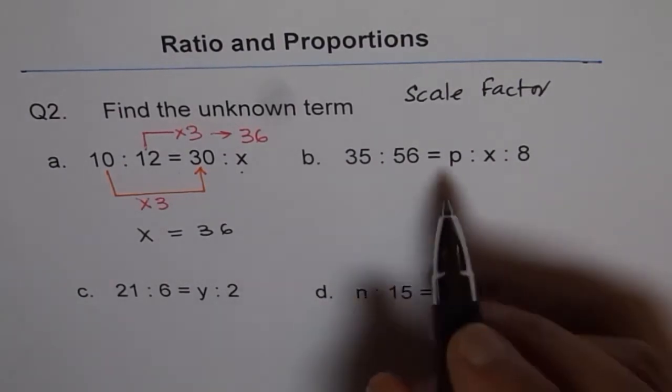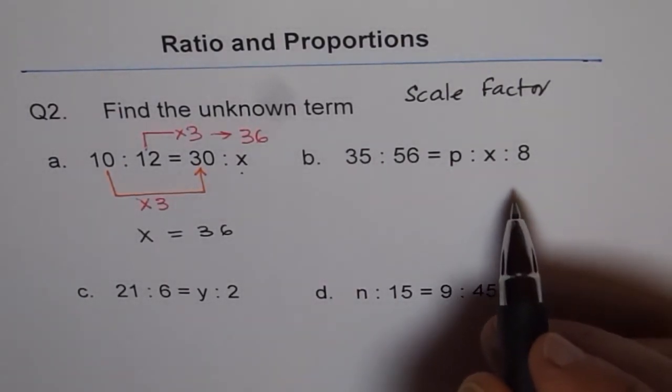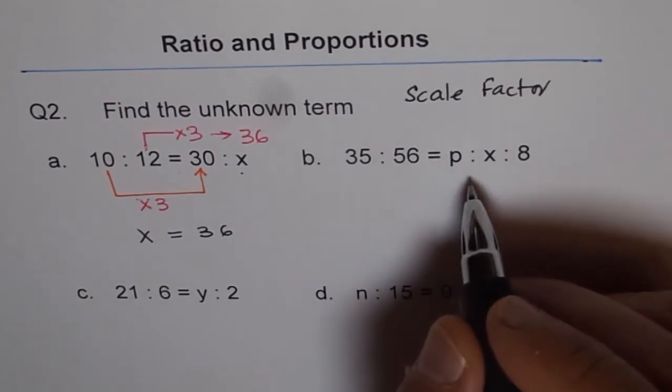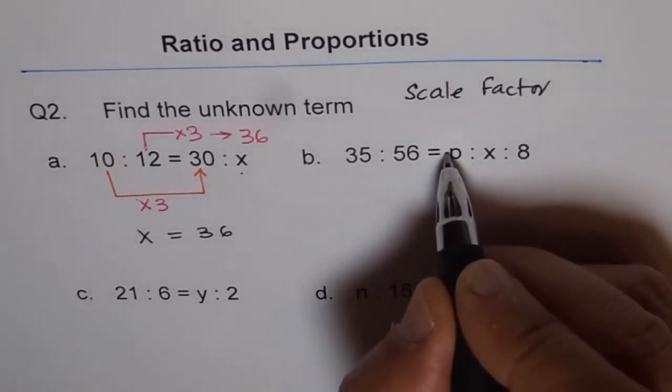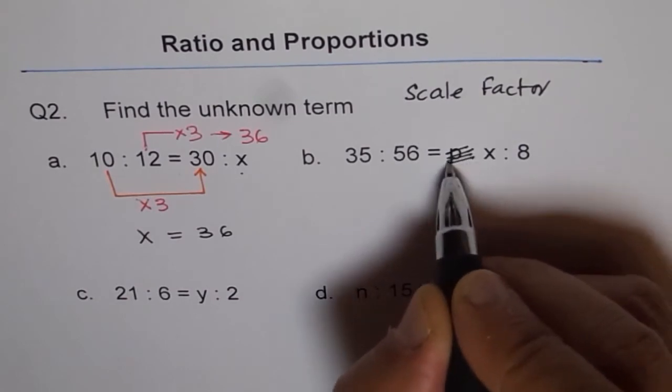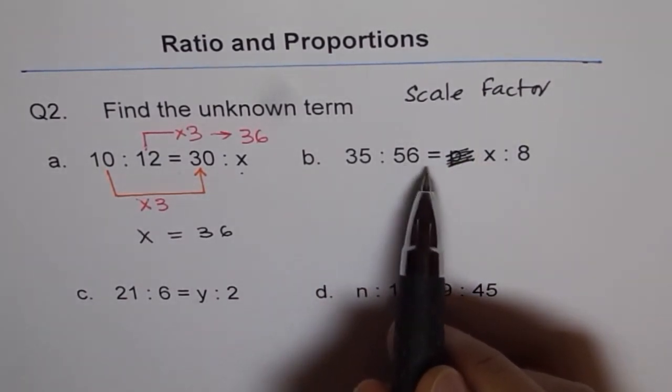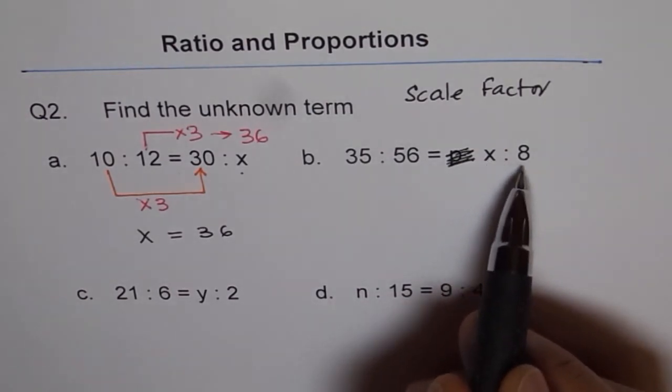Now, let's do this question. It seems there is a misprint here. So there is one extra number. Let me cancel this. So we have 35 is to 56 equals to x is to 8.